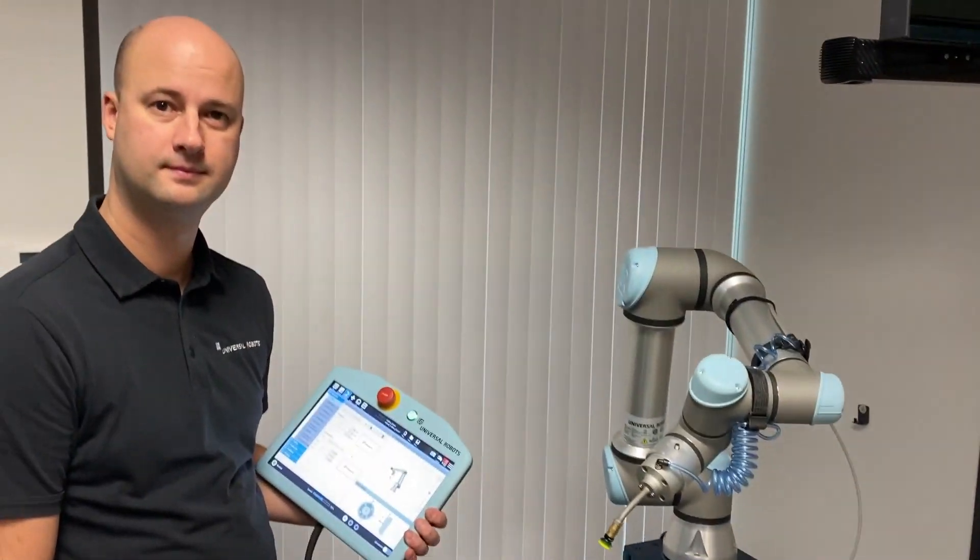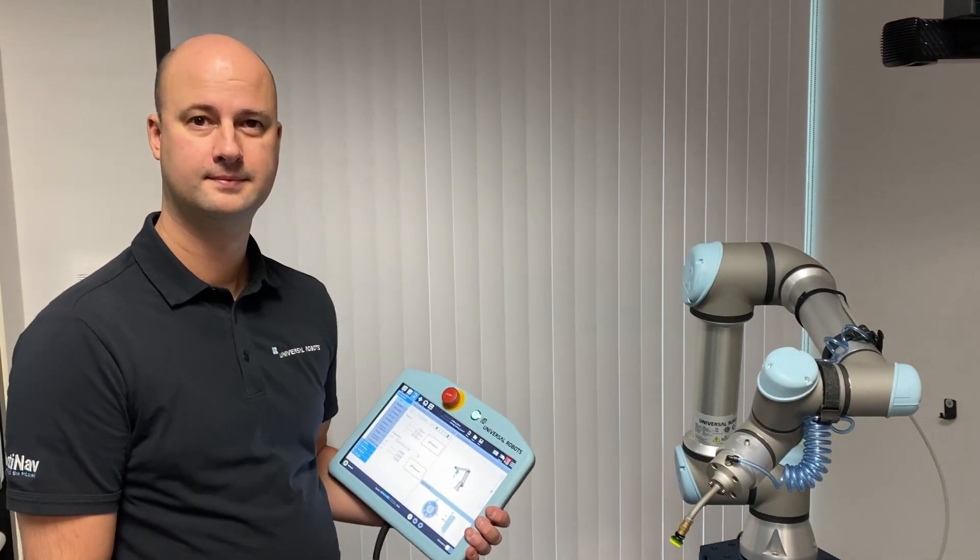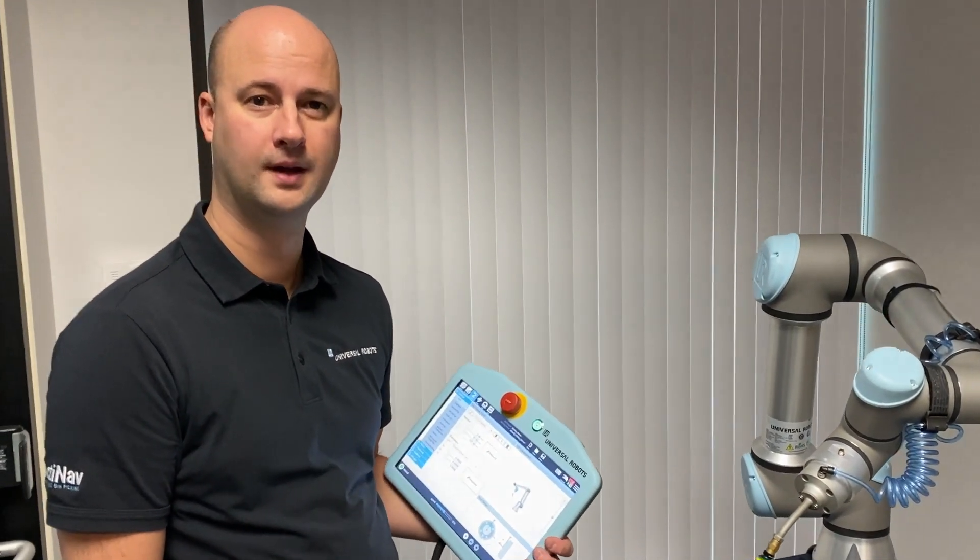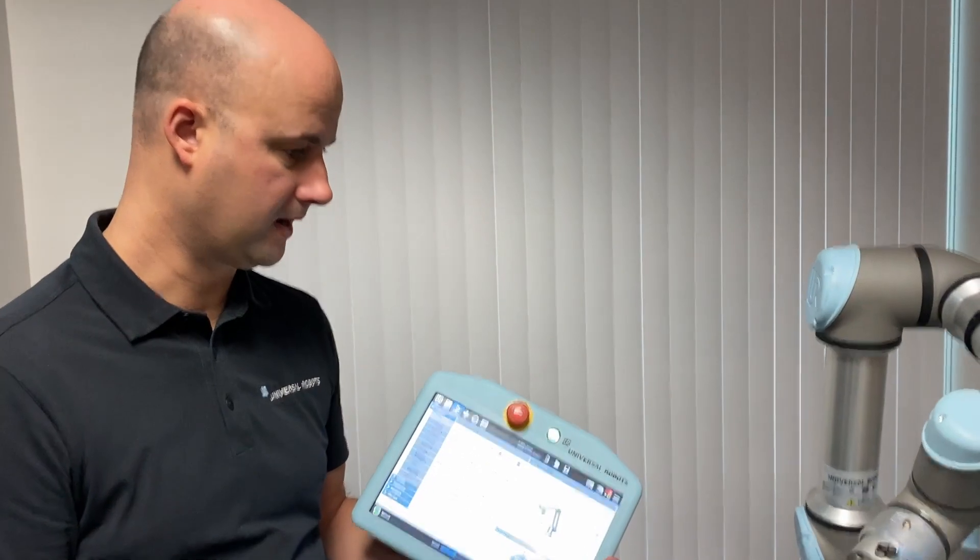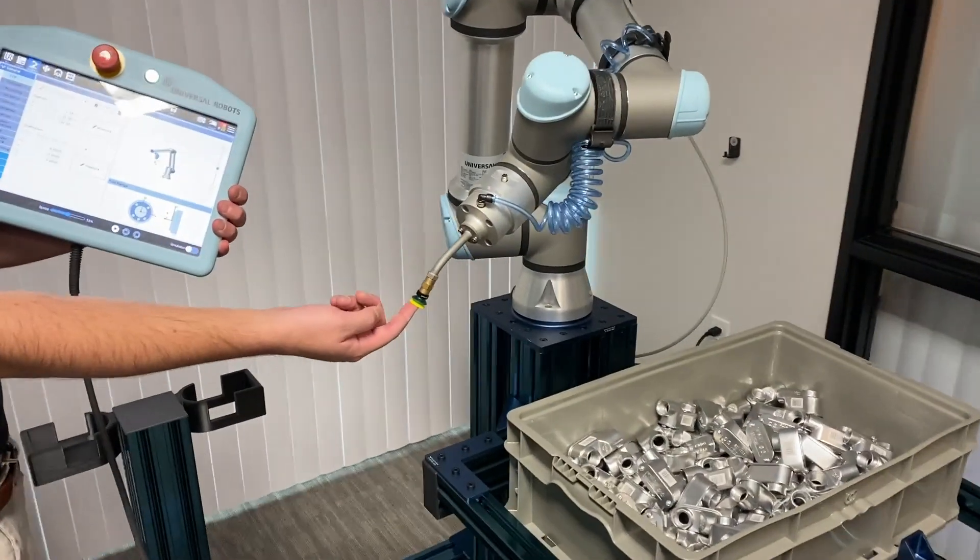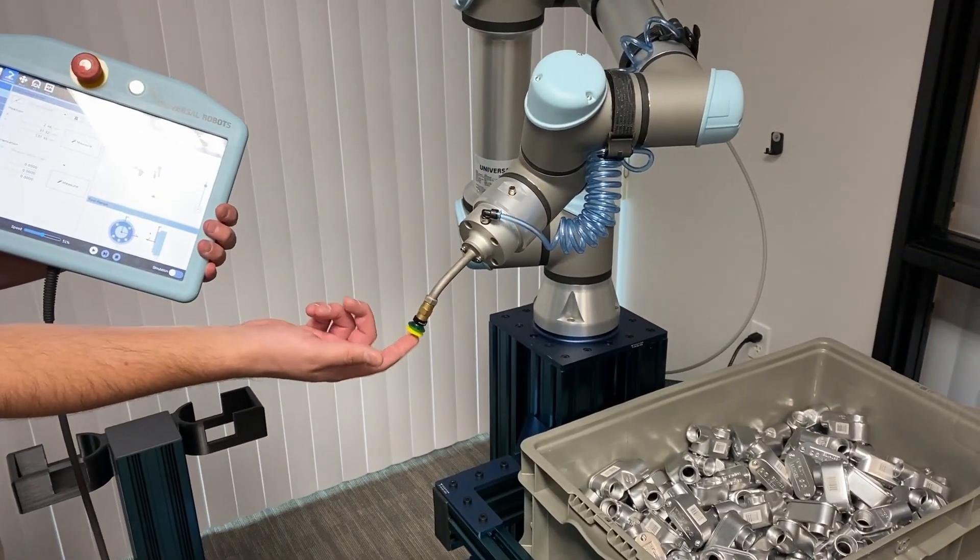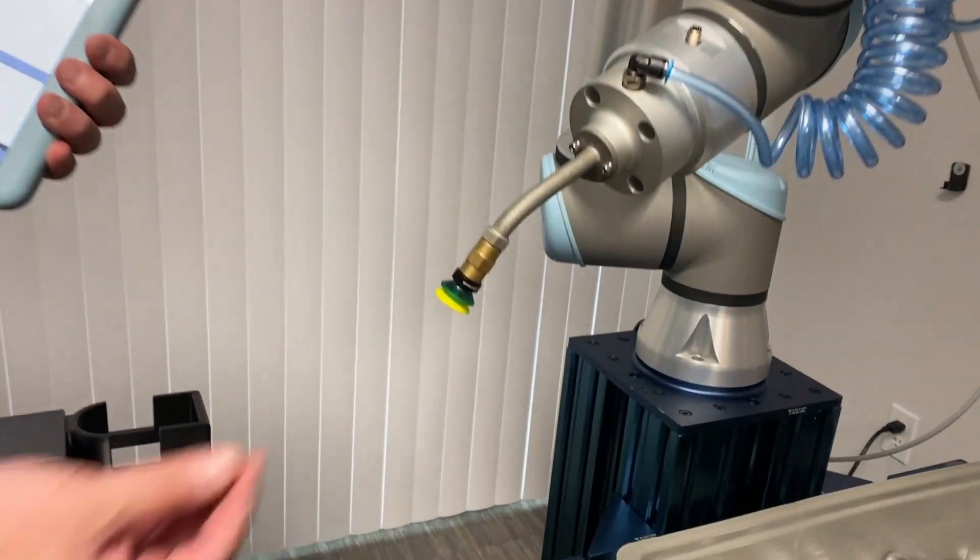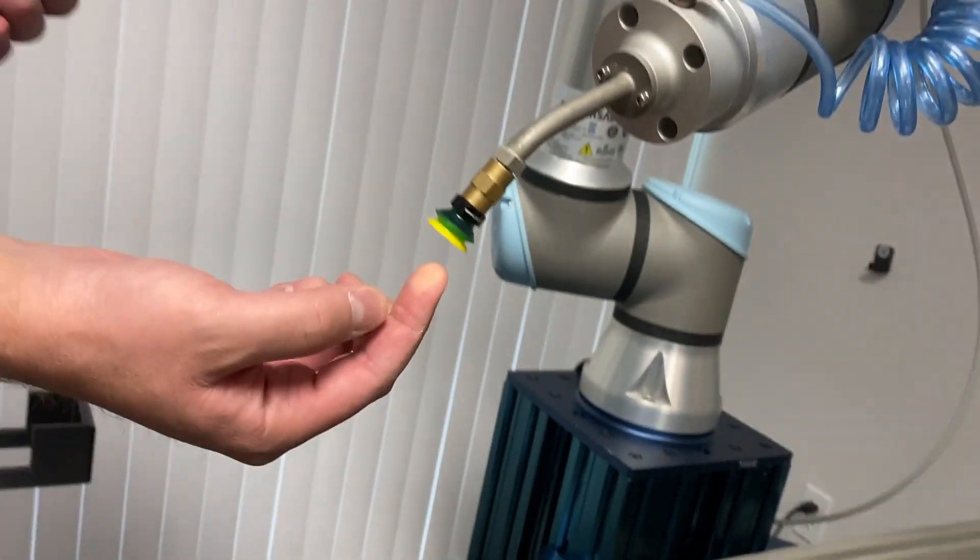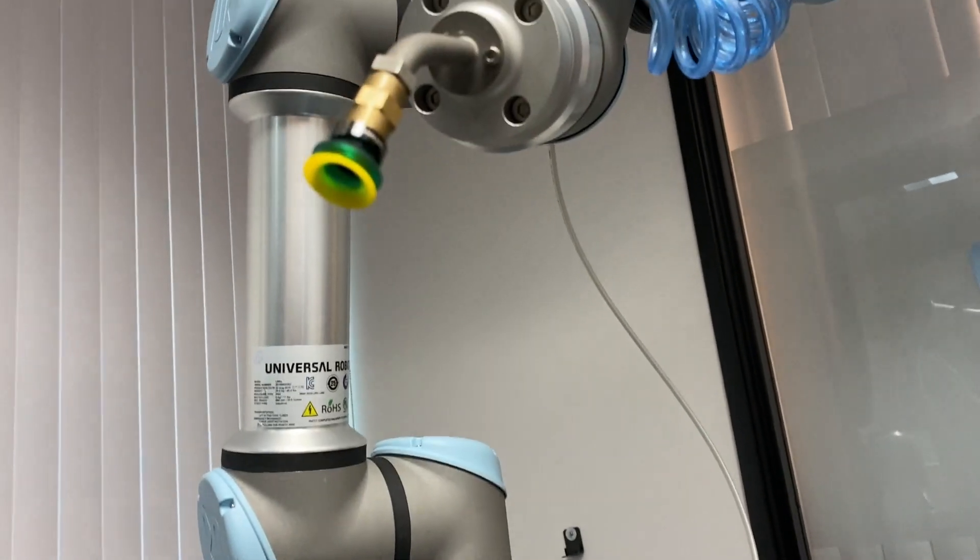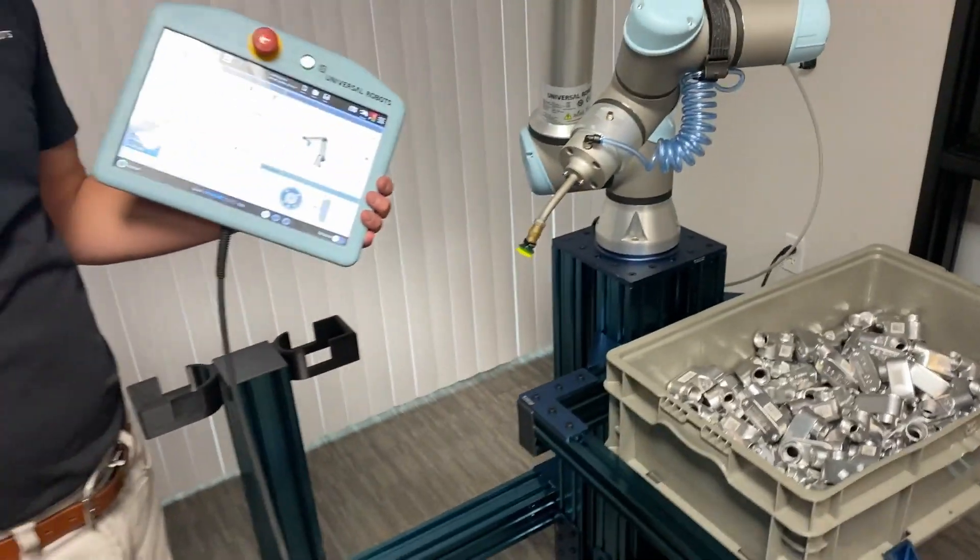Which was fine, it took a minute or two, but first we have to show the software what we just did so that it can do its job better. The first thing we need to do is tell the system, teach it its new TCP or tool center point. Right at the end, in the middle of this suction cup, we want to tell the system what the tool center point is.